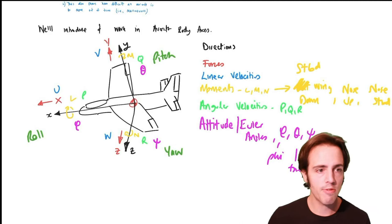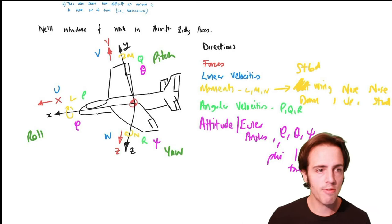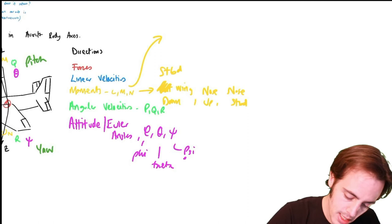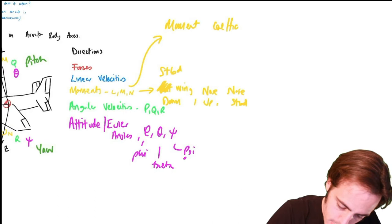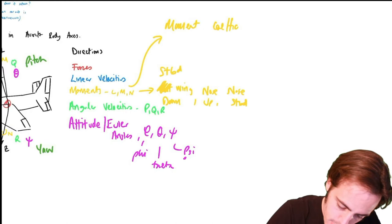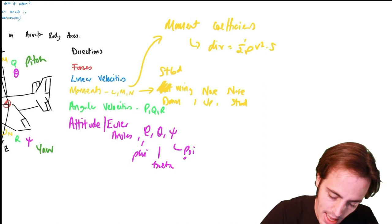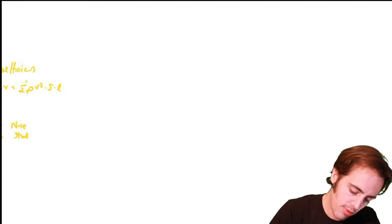We're going to work a lot with these moments and use coefficients based upon them: C subscript l, C subscript m, and C subscript n. The divisor for each of these has to have the form of a moment, so it becomes one-half rho V-squared S, and then some characteristic length needs to be added to each of them.